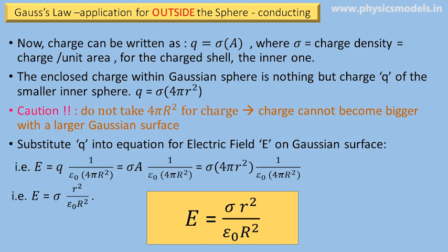Putting that into the equation that we got for electric field, E will be equal to σA times 1/(ε₀ 4πR²). 4π, 4π will cancel, and we will get the equation as shown there: σr² divided by ε₀R².